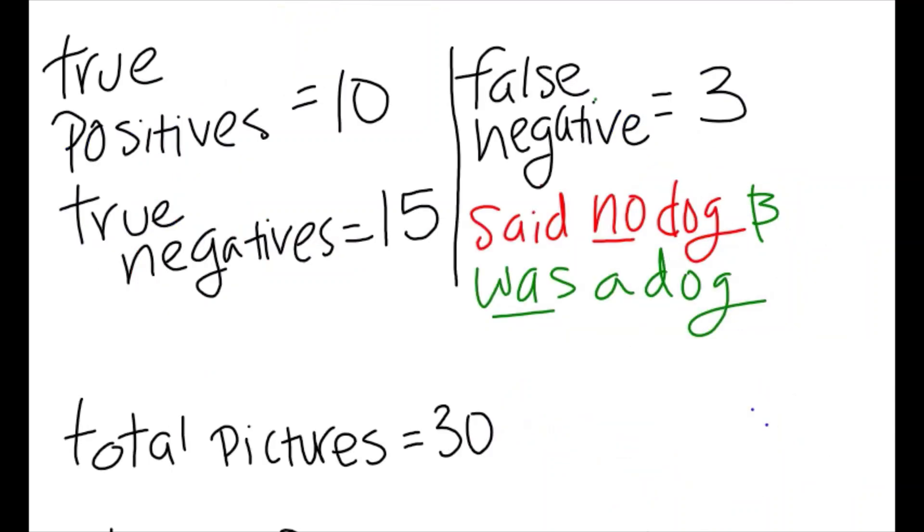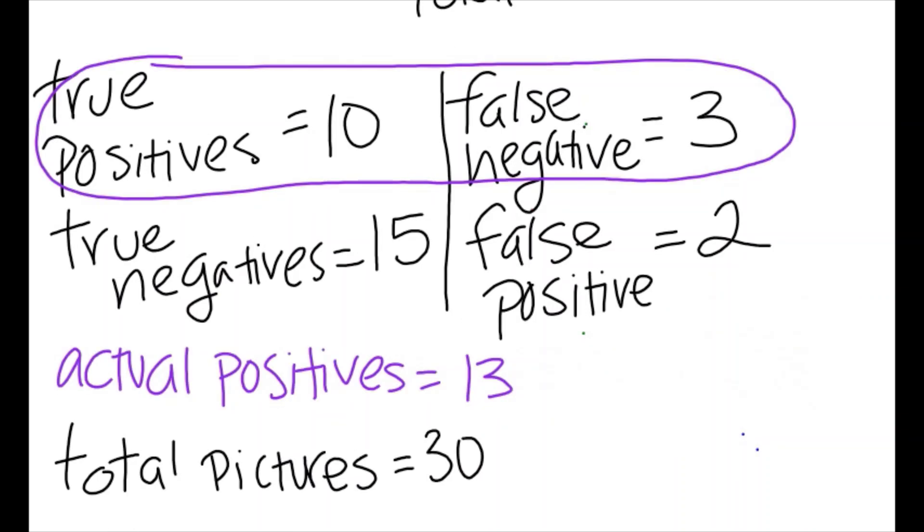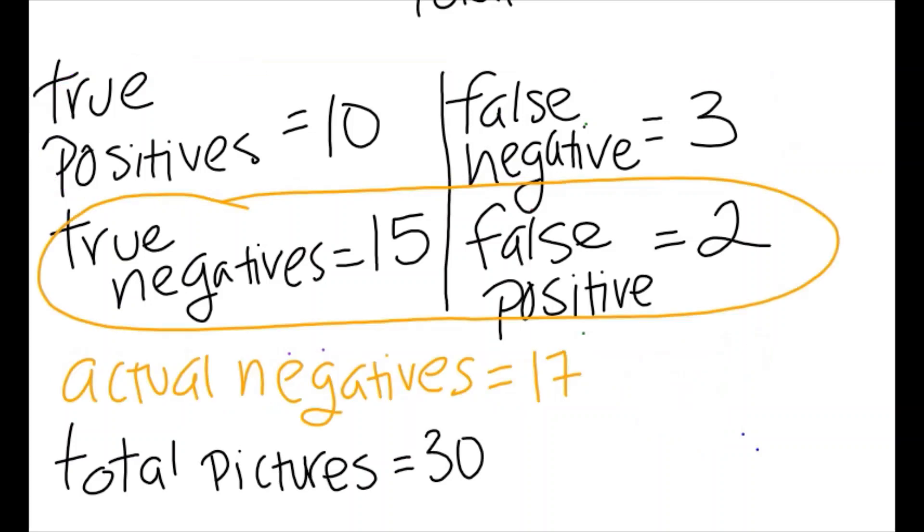Looking at the baby example again, let's say we got three false negatives, which means that three times there was a dog in the picture, but the child had said there wasn't. And we have two false positives, so two times there was not a dog in the picture, but the baby said there was. Therefore, our actual positives is 3 plus 10, which is 13. In that, 13 of the pictures given to the child, there was a dog.